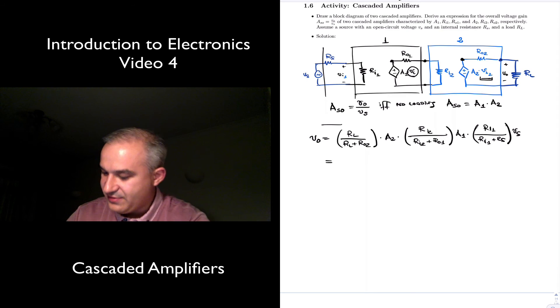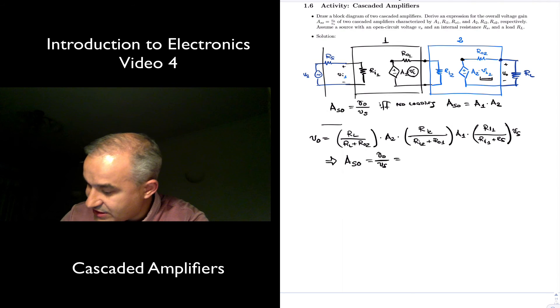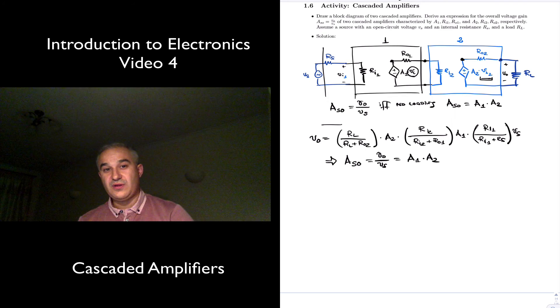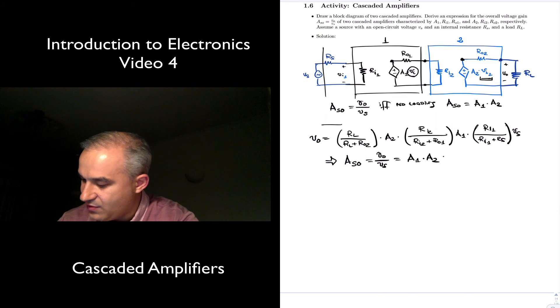So what we have here is that if we look at Aso, which is the output voltage over the source voltage, we divide this expression by the source voltage, which cancels it. What we get is what we expected: A1 times A2, the product of the amplifications.